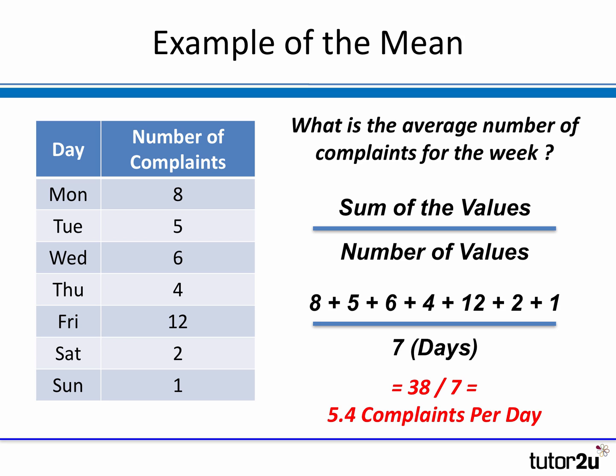Now, of course, you might argue how can you have 0.4 of a complaint? And the answer is you can't — you can't have half a complaint or 0.4 of a complaint. But of course it's a numerical average, so you might round that up to 6, maybe an average of 6 per day.